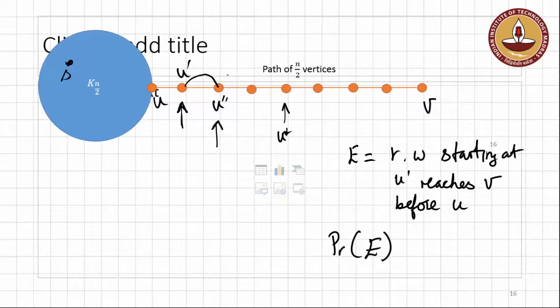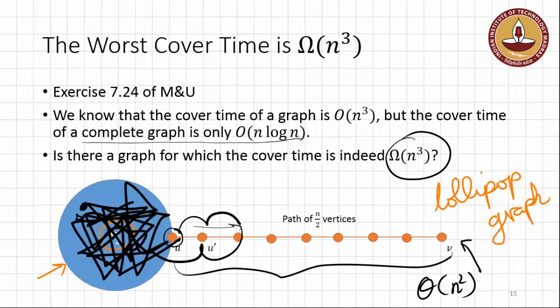So what you can see is that with probability half, you will reach U'' before U, and after having reached U'' with another probability half, you will reach U* before you reach U, and so on and so forth. If you think a little bit and work out the mathematics, you will realize that with probability 1/(2^(log N/2)), you will reach V before you reach U. And working through that should help you reach this goal of showing that the cover time for this graph is, in fact, big Ω(N³).